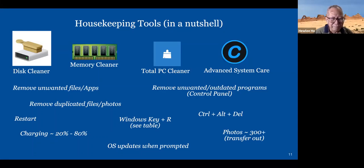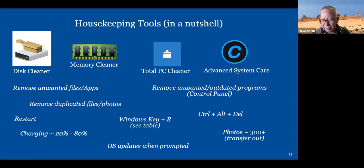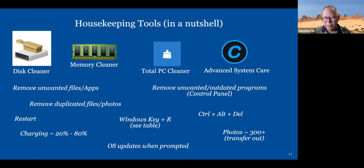Remove unwanted files and apps — this is a command to tell the laptop, desktop, or even your smartphone to clear the files for you. Remove unwanted outdated programs — this is also a command. Restart, Windows key plus R, the three magic: Control, Alternate, Delete. Charging, battery care, OS updating. My advice is if you have more than 300 photos in your smartphone, please think of getting them out to an external drive or thumb drive. I have one special session on storage that will explain this habit in more detail.